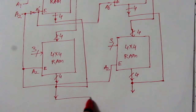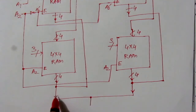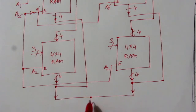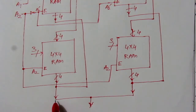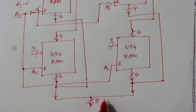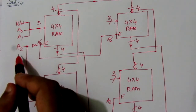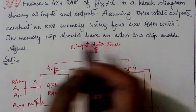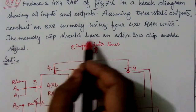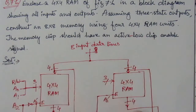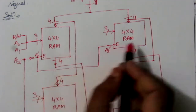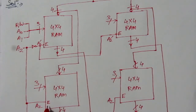To make the full eight-bit data output, the four outputs from the upper RAM pair form the most significant bits and the four outputs from the lower RAM pair form the least significant bits, giving an eight-bit data output. Address line A2 is the most significant address bit. The memory chip uses an active-low chip enable signal.